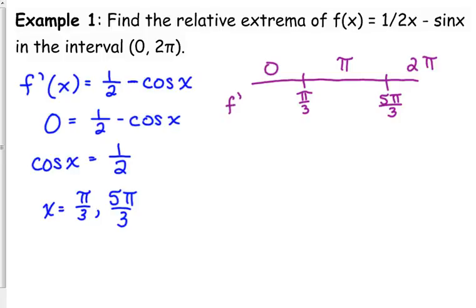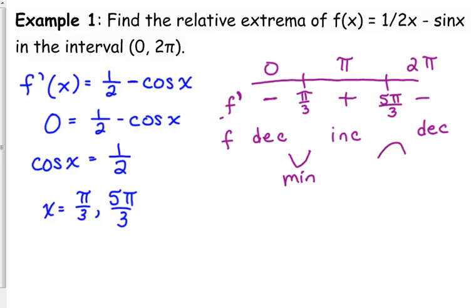We are plugging these into the derivative. Plugging in 0: the cosine of 0 is 1, so 1/2 minus 1 is a negative number. Plugging in π: the cosine of π is −1, so that's the same as adding 1, giving 1/2 + 1 which is positive. Plugging in 2π gives the same result as zero, so it is negative. So f′ was negative — f is decreasing — then positive — f is increasing — then decreasing again. When we change from decreasing to increasing, that's a minimum; when we change from increasing to decreasing, that's a maximum.